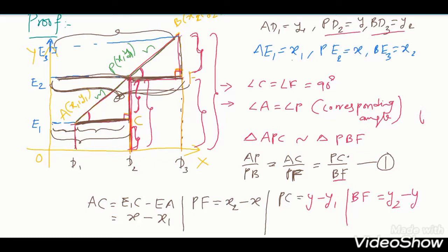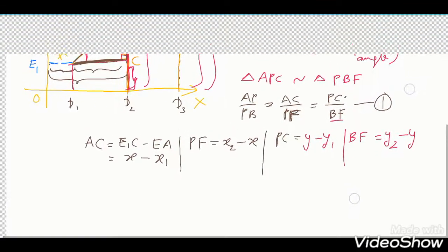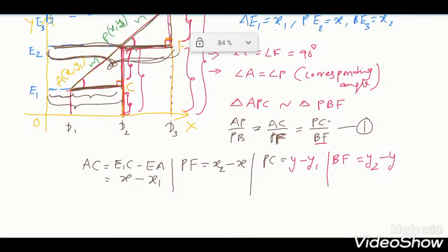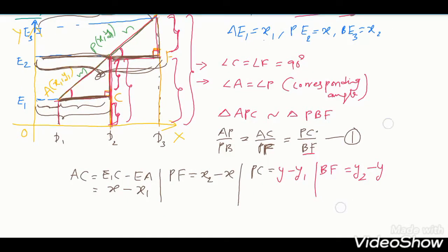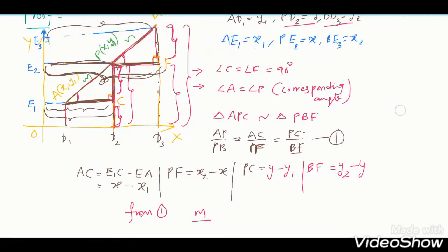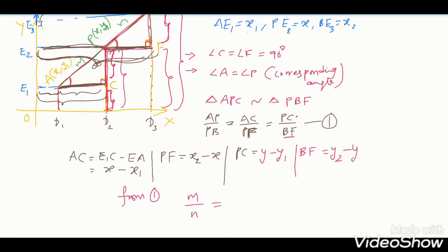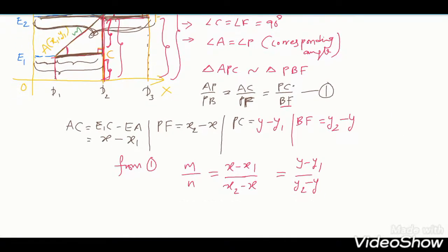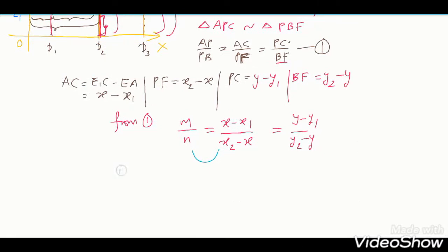Substitute these four values into equation 1. From the diagram, AP = m and PB = n. So m/n = AC/PF = PC/BF, which gives m/n = (x − x1)/(x2 − x) = (y − y1)/(y2 − y). Equating the first two: m/n = (x − x1)/(x2 − x).